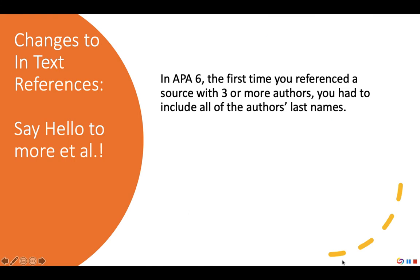The most important change to in-text citation introduced by APA 7 is the increased use of et al., which in Latin means 'and others.' You'll likely recall that in APA 6, when you cited a source with 3 to 5 authors, you had to list all the authors' last names the first time you cited the source in-text. After that reference, you could use only the lead author's last name along with the abbreviation et al. to show that others were involved.